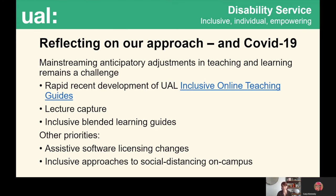I'm going to conclude by reflecting on our approach and how it might help in responding to COVID-19. The biggest challenge we'll face is probably a scarcity of resources as the full impact of COVID on the sector is felt. We need to work hard to ensure our institutions understand the specific risks and impacts for disabled people, and make the case for protecting resource for specialist staff, for training, and to make the anticipatory adjustments needed to include students.